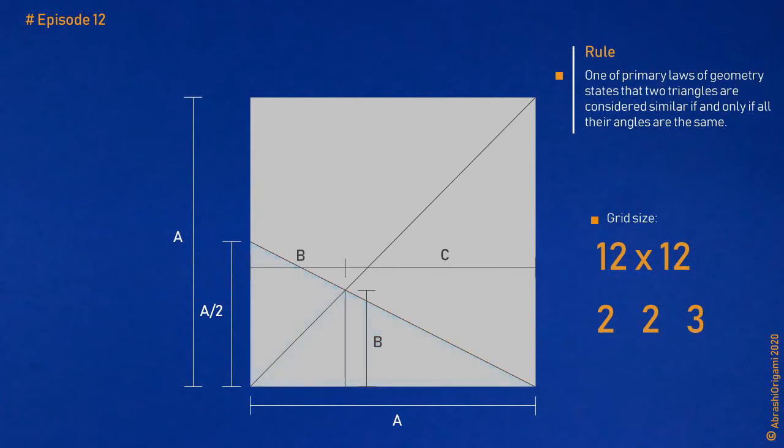Now, taking into consideration the fact that these triangles are similar, we know that the ratio of lengths C and B is equal to the ratio of lengths A and half of an A. Using a simple mathematical notation, this can be written like this. Which, upon rearranging, will produce the following form. An additional rearranging will lead us to this.